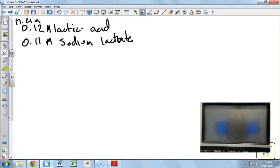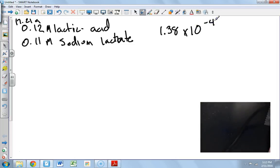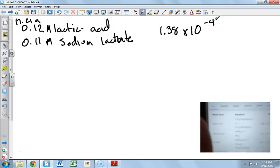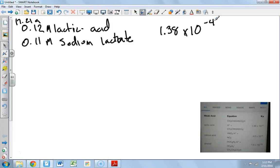Remember there are only two types of problems, either find the constant or find the conditions. The pH is related to the conditions, so we need the constant. When you look up the constant, you get 1.38 times 10 to the minus 4. What I did is I just got out my phone and googled it. There it is right there, lactic acid, 1.38 times 10 to the minus 4. The key is knowing when you need it.